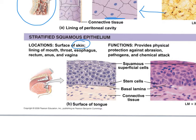Stratified squamous also lines the mouth — inside your mouth there are many layers of squamous cells. Think of all passageways that experience a lot of friction: your skin gets friction from air, clothing, and water; the inside of your mouth has constant contact with saliva, food, your tongue, and teeth.